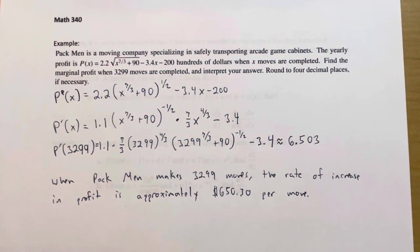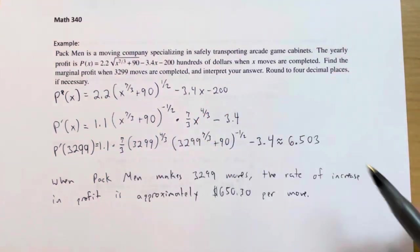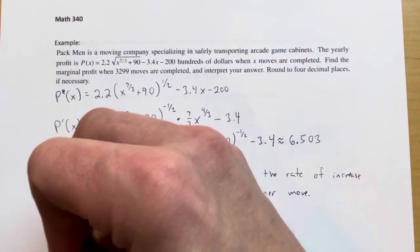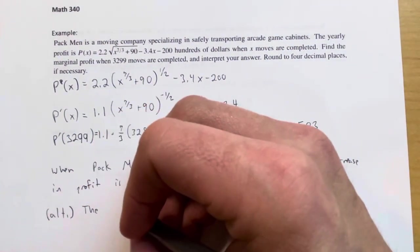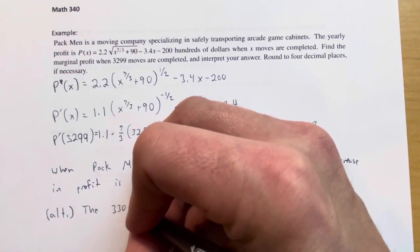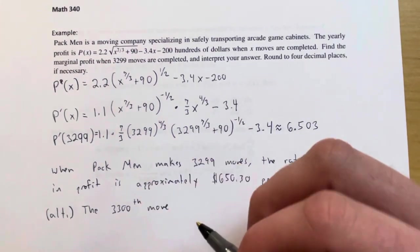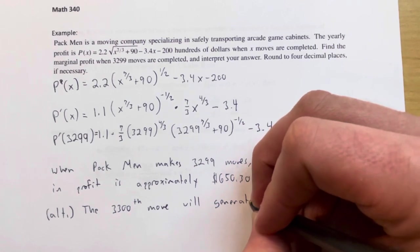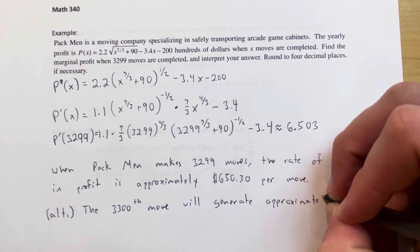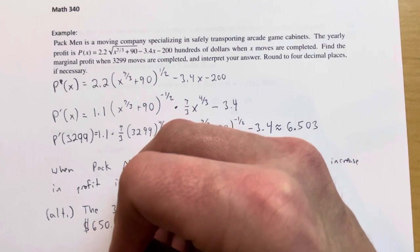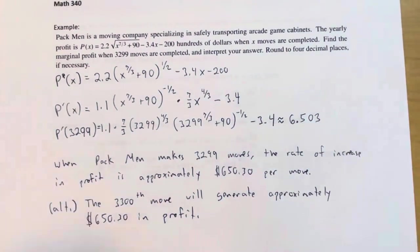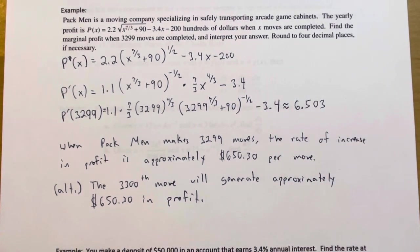Another way of interpreting this quantity — as we discussed in marginal analysis — is as the approximate profit for the very next move. Alternatively, we could say that the 3,300th move, being the next move after 3,299, will generate approximately $650.30 in profit. We keep returning to marginal analysis because it's how we interpret derivatives of the types of functions we see in business and economics applications.